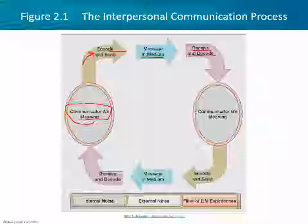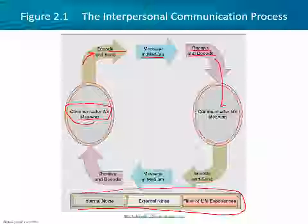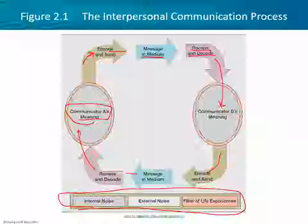Someone else then receives and decodes that meaning. Maybe it matches up with what you had in mind, maybe it doesn't — it's never going to be 100%. There's always going to be noise. No matter how crystal clear you try to be, there are always factors that distort things somewhat. I prefer to look at it as communicator B's creativity — they're not a zombie or a computer, they're a human being. Communication is always a cycle, never a one-way process.